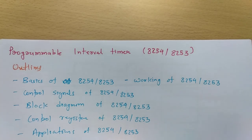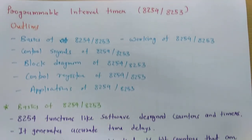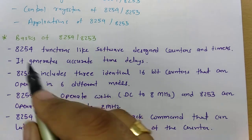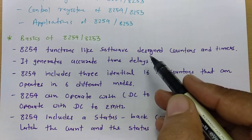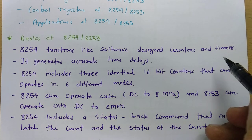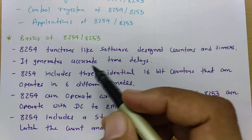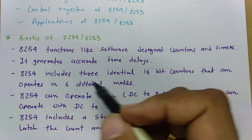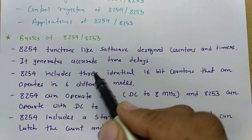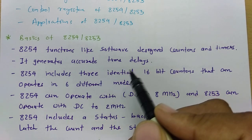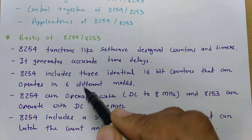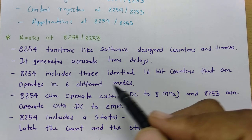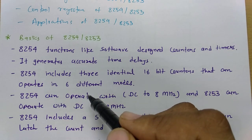Let us begin with the basics of 8254. The 8254 functions like a software-designed counter or timer and generates accurate time delays. It includes 3 identical 16-bit counters that can operate in 6 different modes.